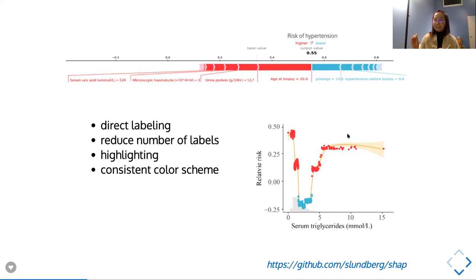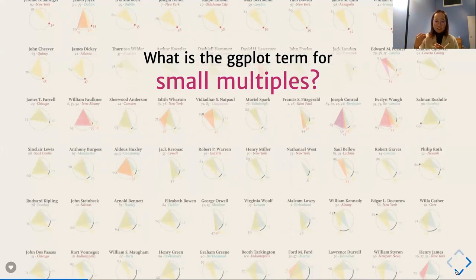This is actually a funny thing — during the election, Joe Biden was at one point colored red, and Trump was colored blue, and my brain just couldn't handle that. Those are some of the key tools we can use to reduce cognitive load when communicating with charts.